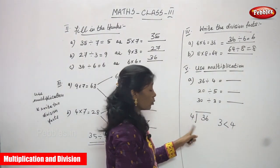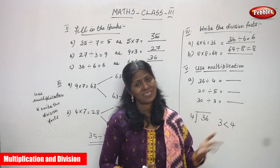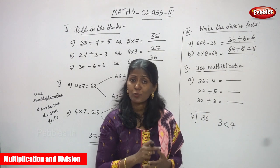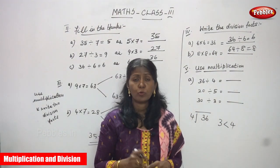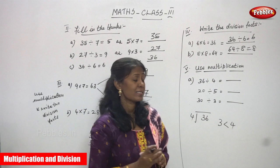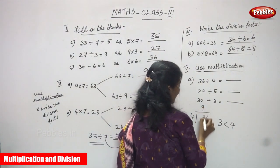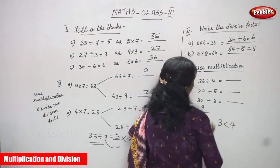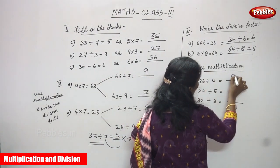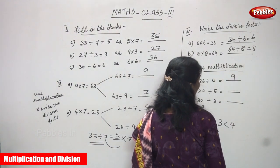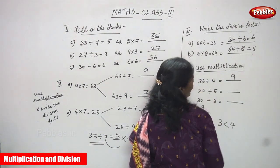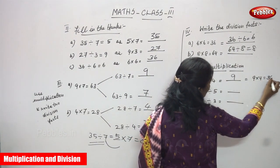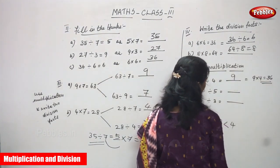36 is going to be divided by 4. Looking at the fourth table: 1×4=4, 2×4=8, 3×4=12, 4×4=16, 5×4=20, 6×4=24, 7×4=28, 8×4=32, 9×4=36. So you must write 9. 36 minus 36 is 0. So 36 divided by 4 is 9. Using the multiplication table: 9 into 4 is 36.